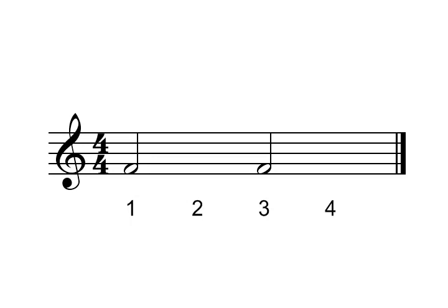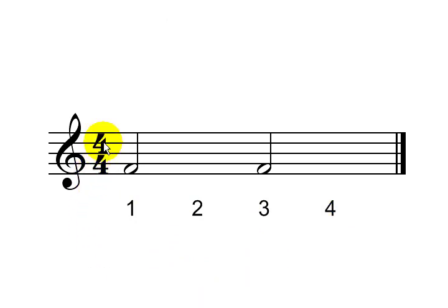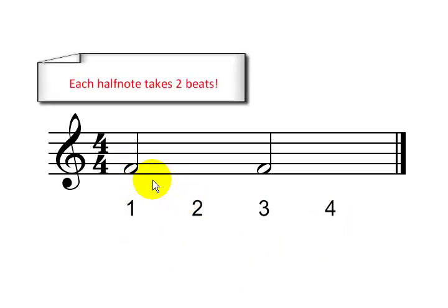Now, here we have a sample with the half notes. You can see the counts under the staff again, and the time signature is 4/4 time. Let's take a listen. And now I will count these bars along with the example. Notice how each half note takes 2 beats. This one takes 1 and 2, and this one takes 3 and 4.